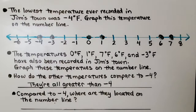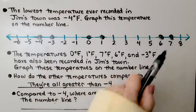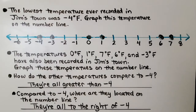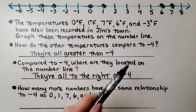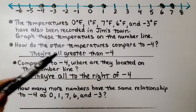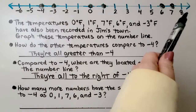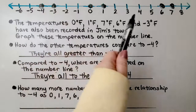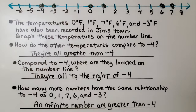Compared to negative four, where are they located on the number line? They're all to the right of negative four. How many more numbers would have the same relationship — would all be greater than negative four? There's an arrow at the end of the number line, meaning it keeps going on and on. We would have an endless, infinite number of values going to the right of negative four.